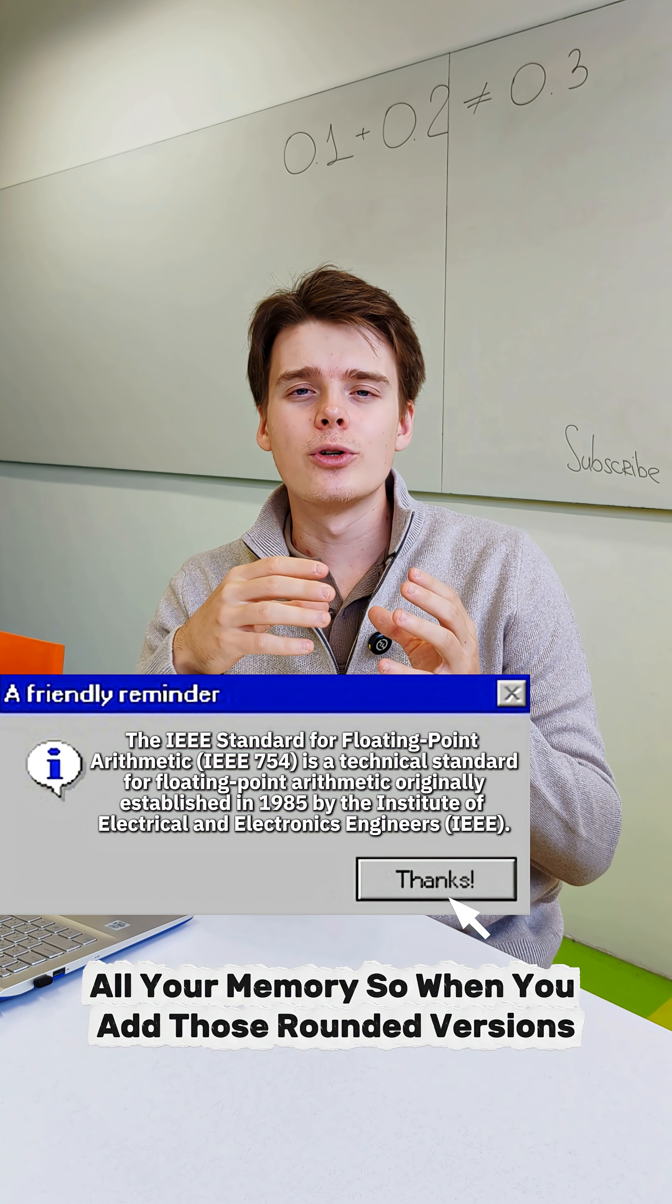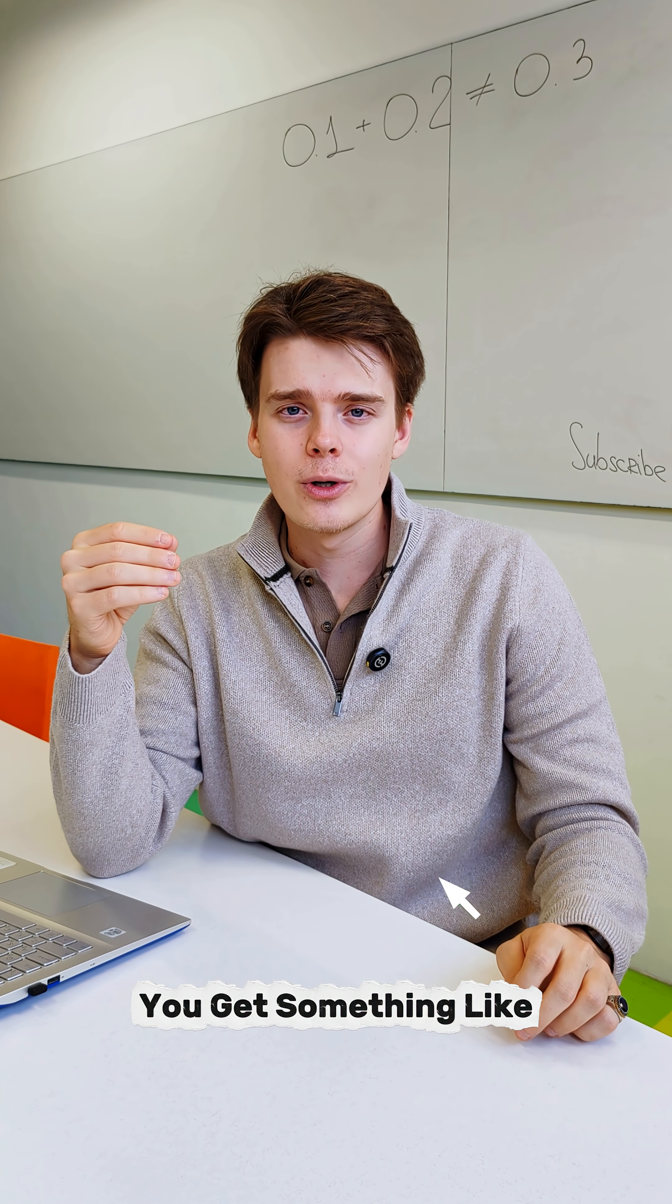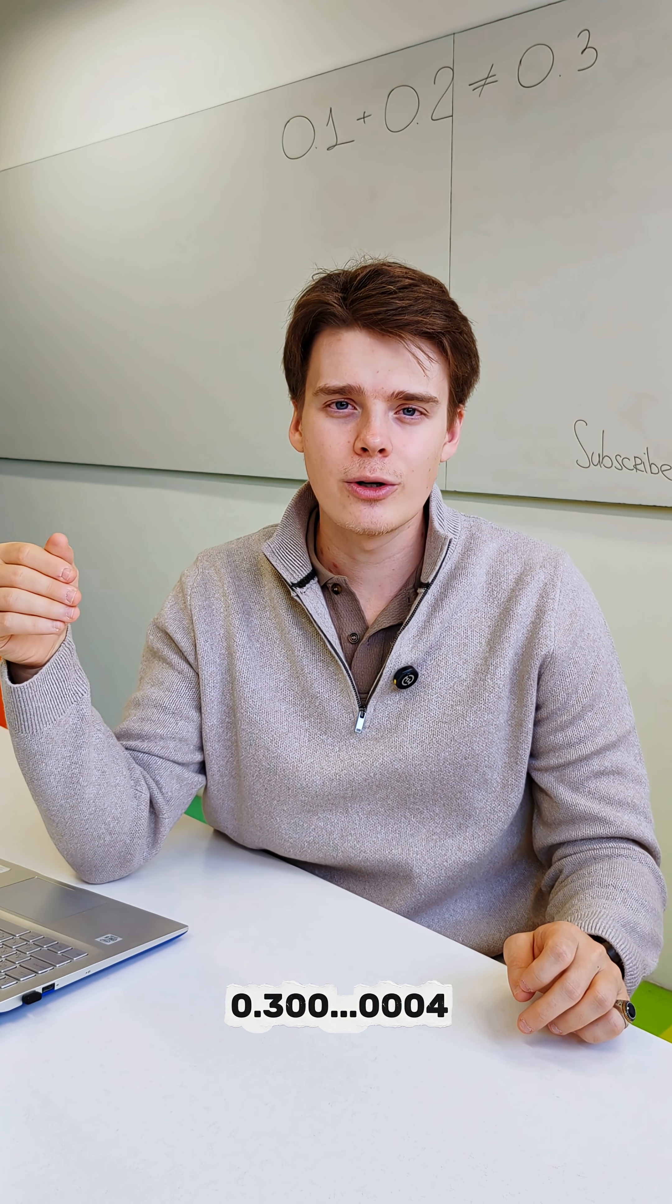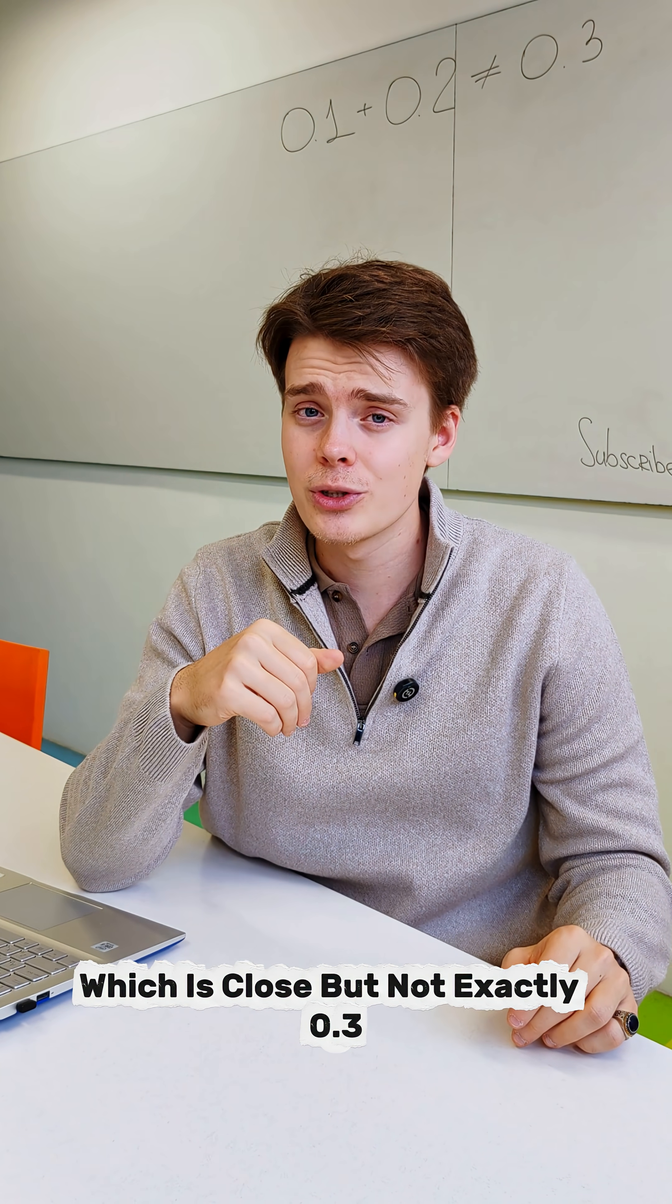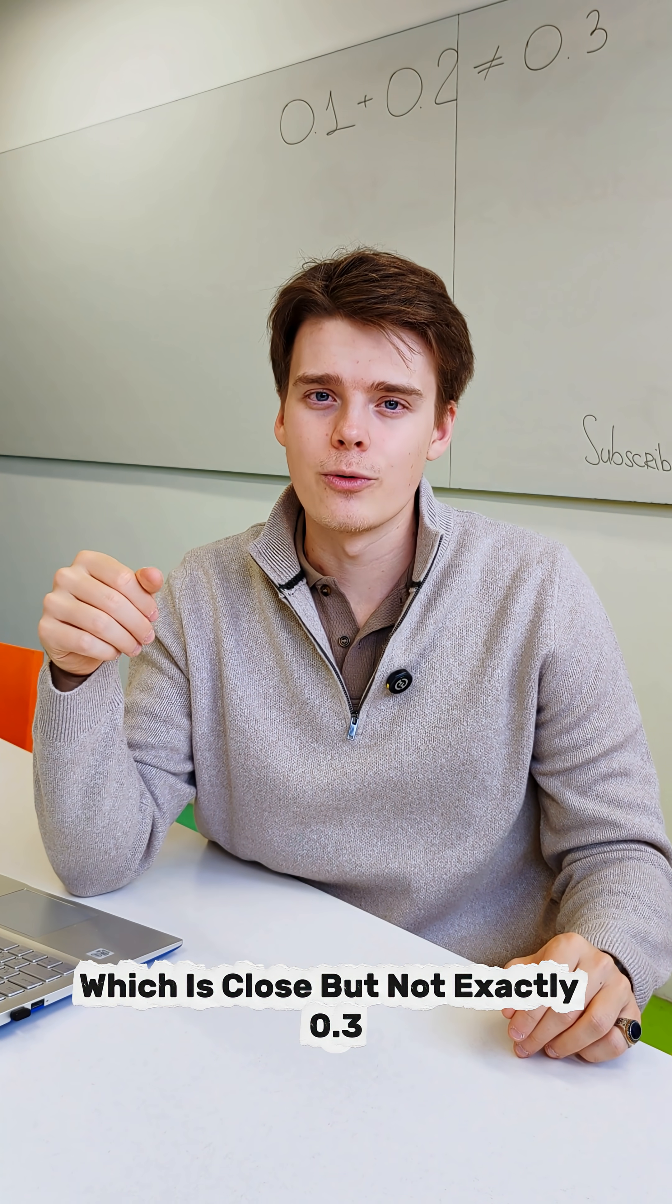So when you add those rounded versions, you get something like 0.30000004, which is close, but not exactly 0.3.